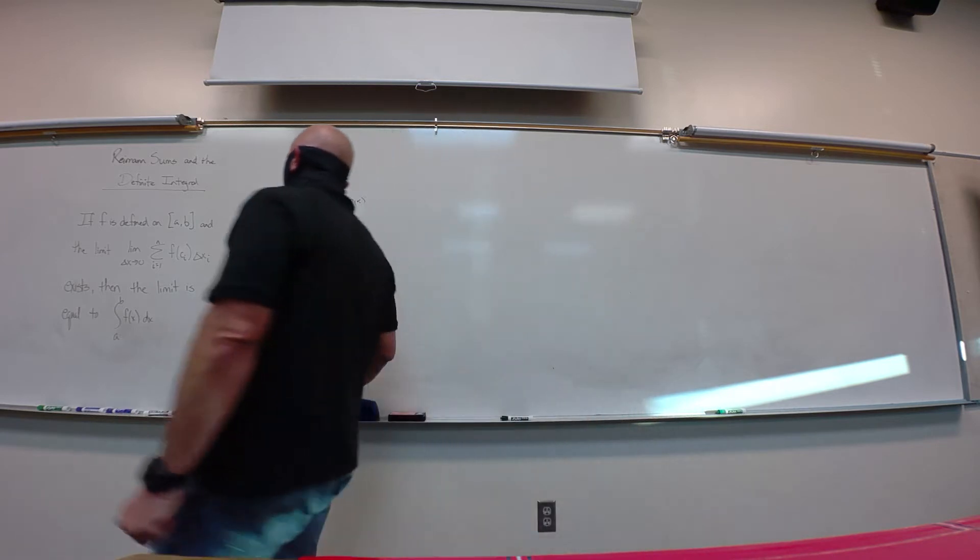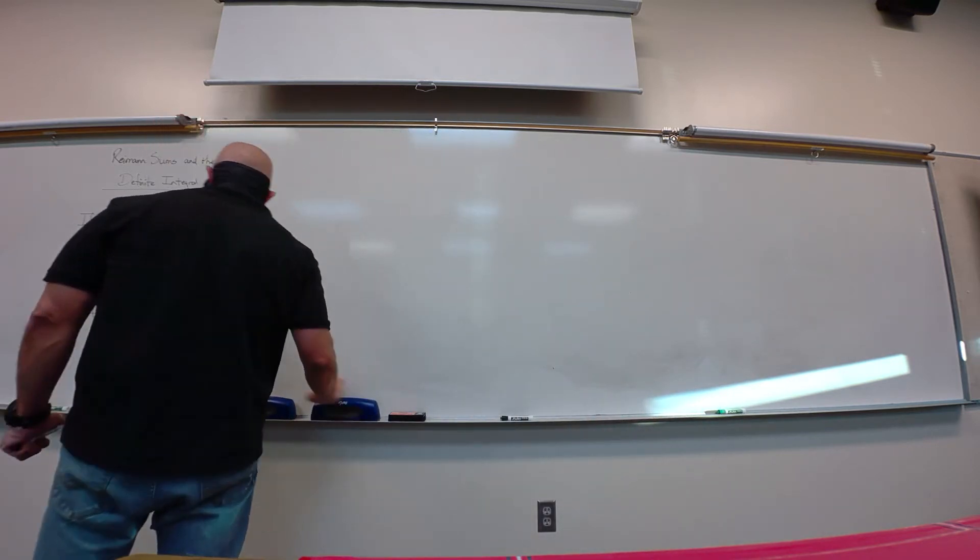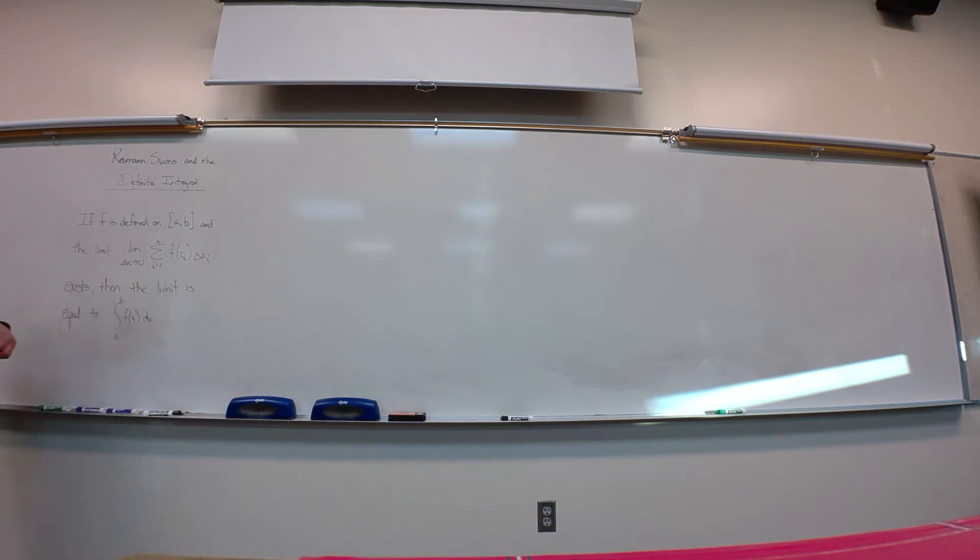Sum, we're summing them up. One of the applications of a definite integral is area, one of the applications. So the definite integral is equal to this infinite Riemann sum. Now, we call this a definite integral. Think back to what we've already done. We've already done this where there were no numbers there. We just integrated. We found that original function. Call that an indefinite integral. That's why we had the plus c. If I have values, that's called a definite integral, because I'm talking about within a definite region. Make sense to everyone?